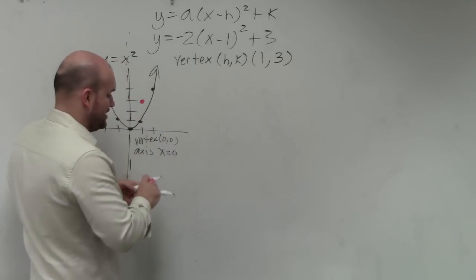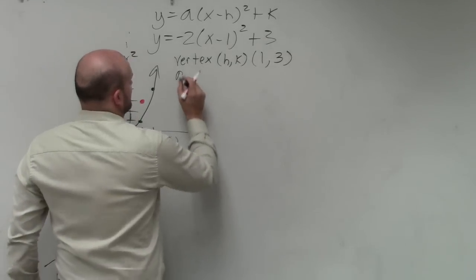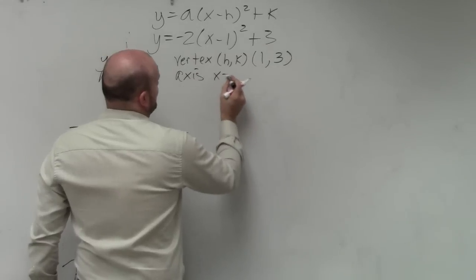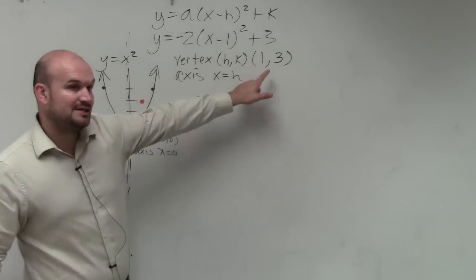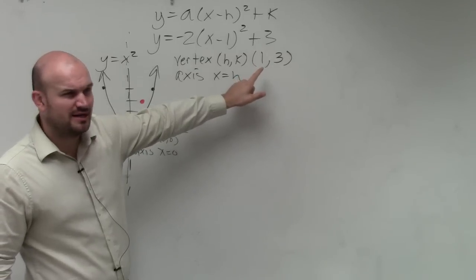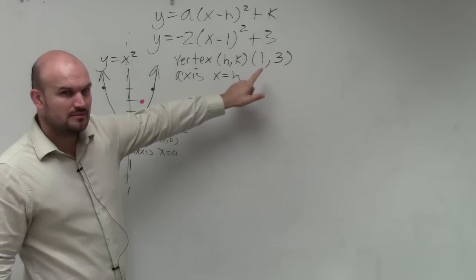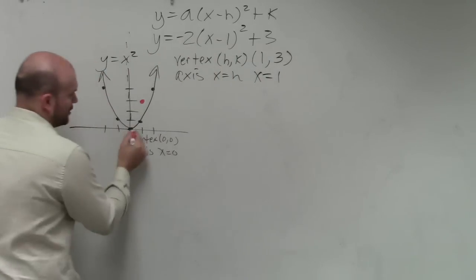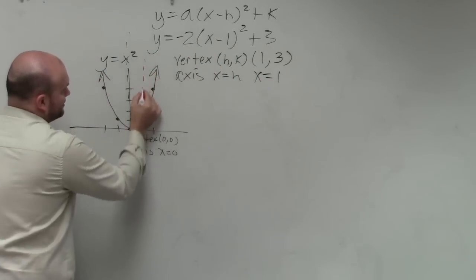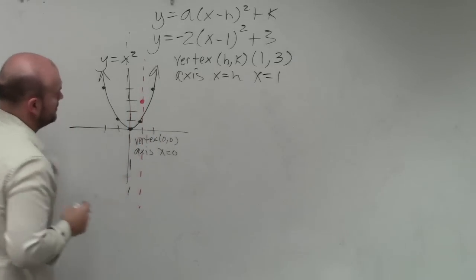The axis of symmetry, when in vertex form, is x equals h. So since we know that my h is 1, does anybody have any questions why it's 1 and not negative 1? No? OK. So x equals 1. So then I go over to 1, and I draw a nice little dotted line.